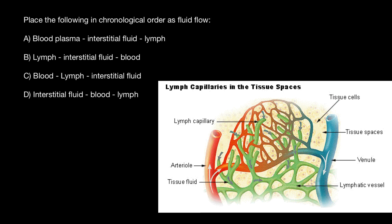Basically, fluid flows from the arterial due to hydrostatic pressure. Blood plasma, which is a major component of the blood, enters the space between cells and flows between them, supplying cells with sugars, hormones, proteins, oxygen, and so on, and also takes away waste products of the cells.